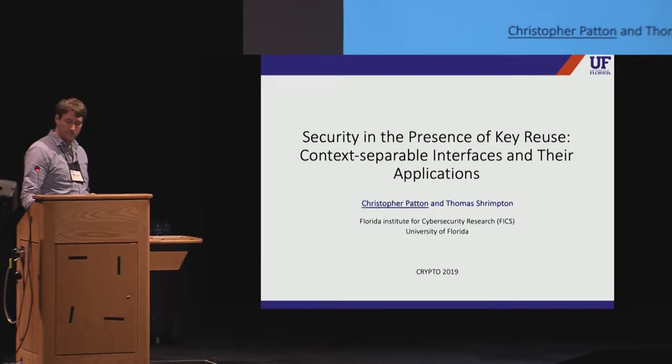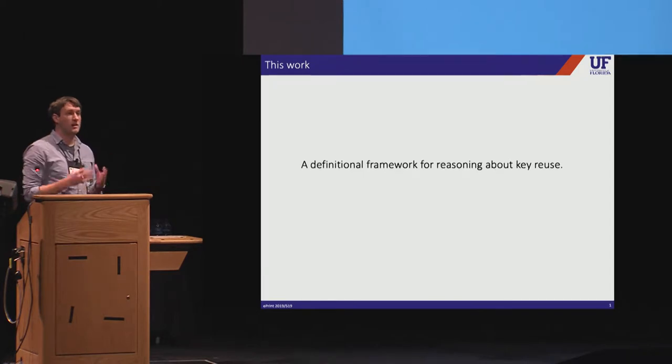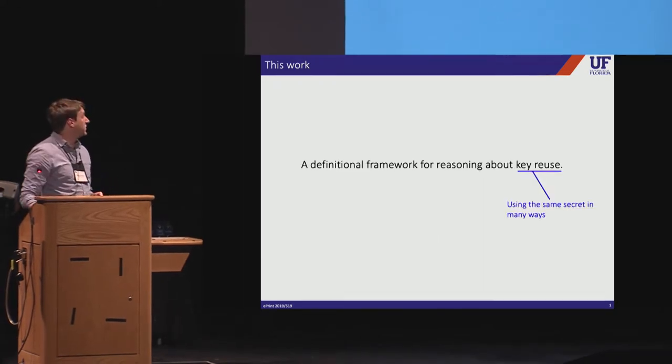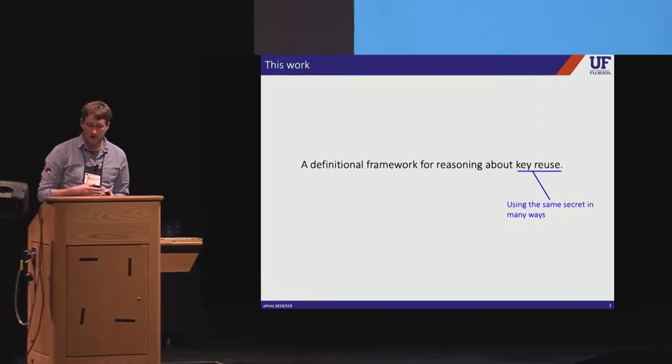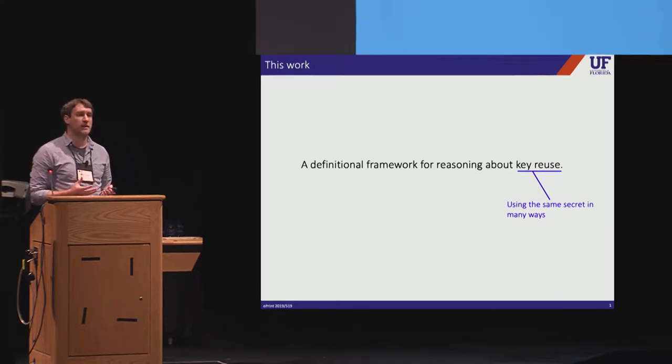All right, okay. So the main contribution of this next work is a definitional framework for reasoning about key reuse in a very broad way. So key reuse occurs when the same secret is used in multiple ways, either within a crypto system or among different applications. This practice is risky, as we all know, and it's usually discouraged, but key reuse can crop up in some unexpected ways that make it difficult to enforce key separation all the time.